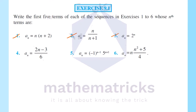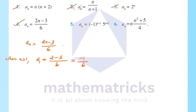Next, question 4: an is equal to (2n minus 3) divided by 6. When n equals 1, that is equal to (2 minus 3) divided by 6, that is equal to minus 1 by 6. When n equals 2, that is (2 into 2 minus 3) divided by 6, which is (4 minus 3) by 6, that is equal to 1 by 6.